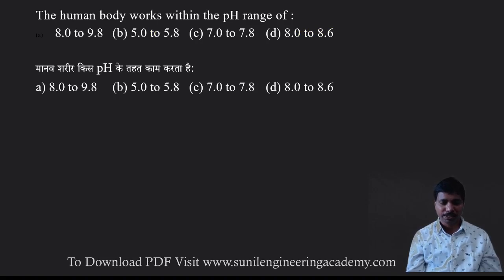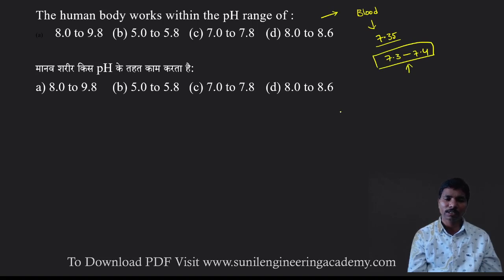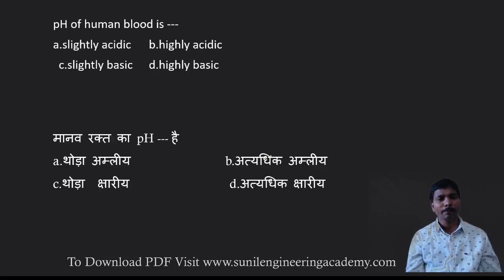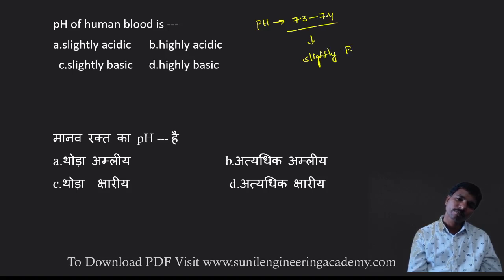Our human body has a lot of blood, and blood pH is approximately 7.35 — that is 7.3 to 7.4. Our human body works on a slightly basic pH range of 7 to 7.8. The question asks: pH of human blood is — slightly acidic, highly acidic, slightly basic, or highly basic? Since pH is 7.3 to 7.4, it is slightly basic. Answer is option C.